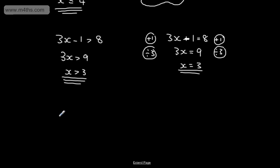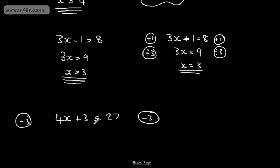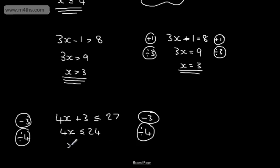Let's do another one: 4x plus 3 is less than or equal to 27. We subtract 3 from both sides of the inequality, giving 4x is less than or equal to 24. Then we divide both sides by 4, and we get x is less than or equal to 6. If asked for any integer values that satisfy that inequality, for example 3, we could say 2, 1, minus 10 — any values that satisfy it.